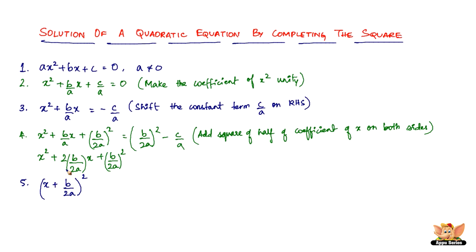In the fifth step, we can write the entire left side as x plus b by 2a whole squared, since x squared plus 2ab plus b squared equals x plus b by 2a whole squared. On the right-hand side, taking the LCM of 4a squared, we get b squared minus 4ac divided by 4a squared. That is the fifth step.